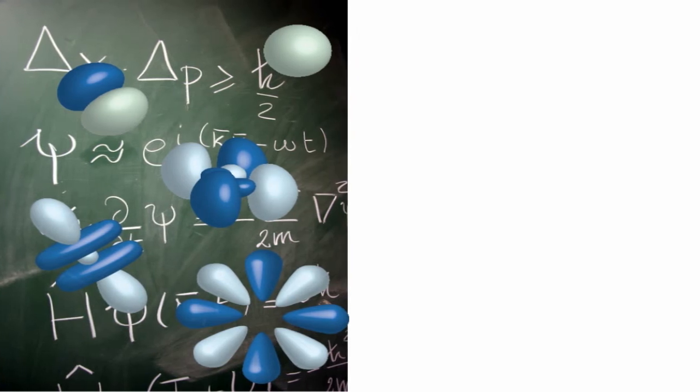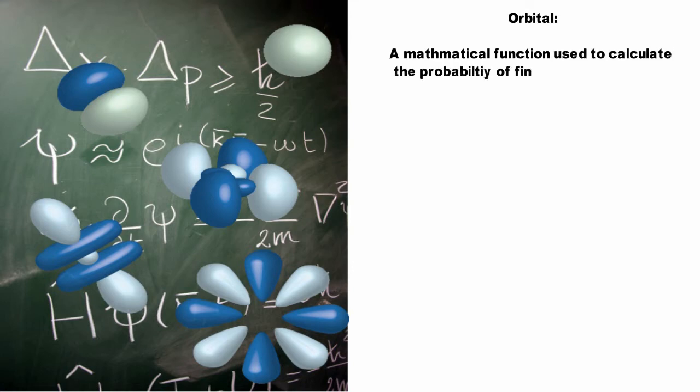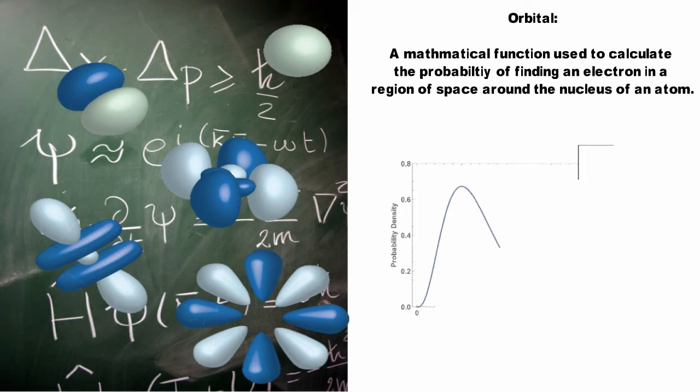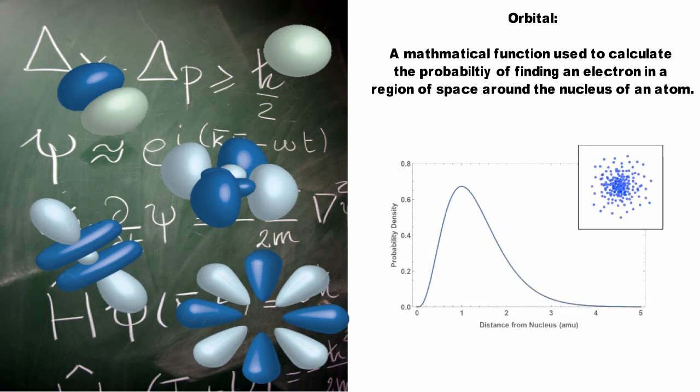We can only create a probability distribution of where an electron is likely to be found. Erwin Schrödinger refined Bohr's model using mathematical equations to predict an electron's probability of being in a certain position at any time. The space described by an electron's probability distribution is an orbital. The probability density of an electron decreases as the distance from the nucleus increases. This means the likelihood of finding an electron is higher closer to the nucleus.